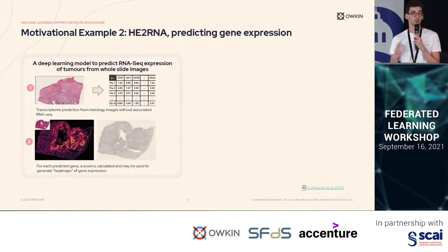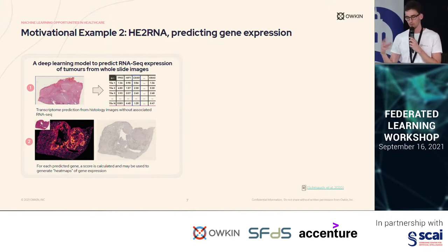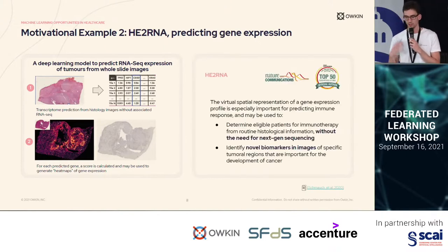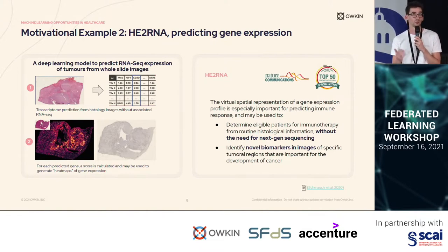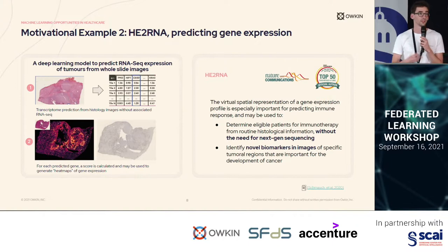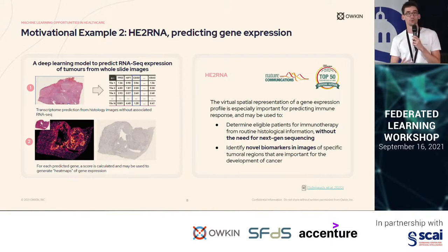Further, this machine learning model was specialized because the way the genomic information is computed — initially for the whole slide — was able to retrieve it spatially. This virtual spatial information may help doctors in the future to allocate treatment to patients much faster than now, because there is no need to undergo next-gen sequencing of the tumor to know if it will be receptive to immunotherapy. Just with a routine diagnosis you can know it, and it may also be possible to better understand different kinds of cancer.